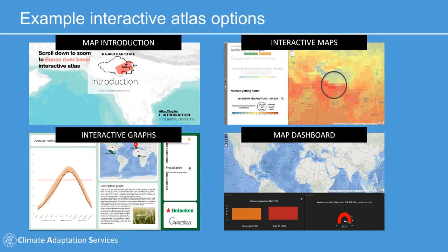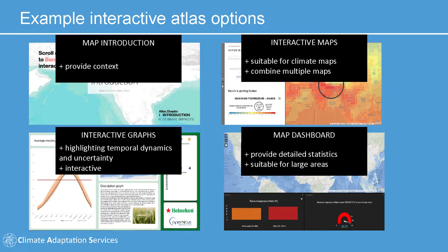Why should you use an interactive atlas? An interactive atlas helps to highlight your work to a wider audience. There are a range of visualization tools available for that, which we will discuss directly afterwards. Our goal is to showcase the relevance of your work in an appealing way and show how data from the Climate Data Store is being used in that process.